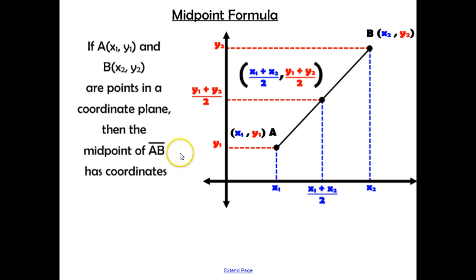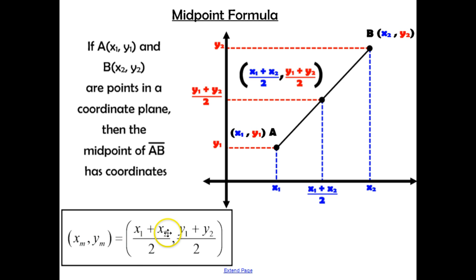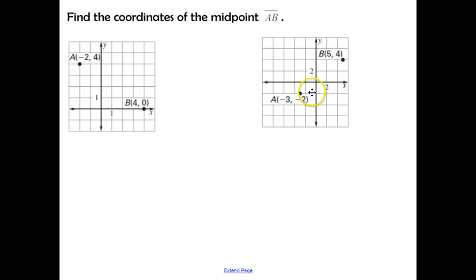If A and B are points in a coordinate plane, then the midpoint of segment AB has coordinates like this. Your final answer is going to be a coordinate point — the x coordinate of the midpoint and the y coordinate of the midpoint. The way you find that is x1 plus x2 divided by 2 for the x coordinate, and y1 plus y2 divided by 2 for the y coordinate. So let's do a little bit of practice.